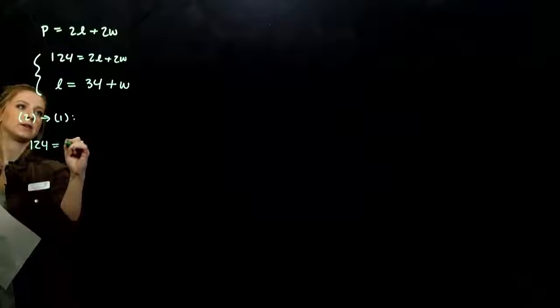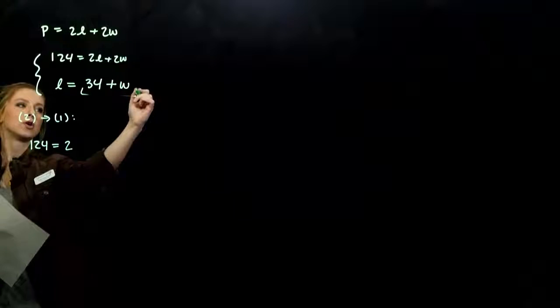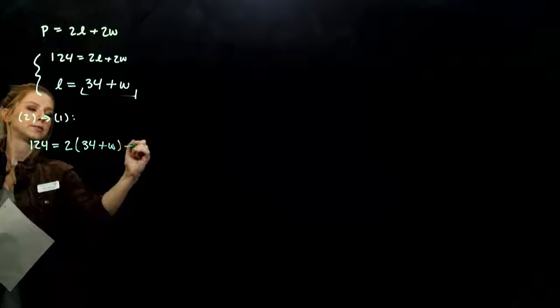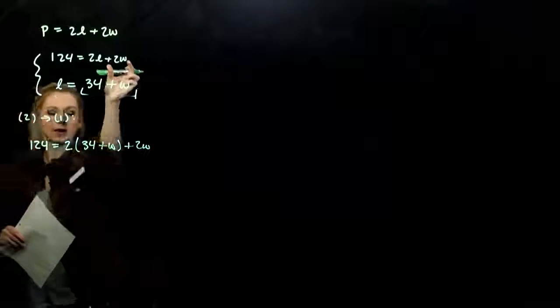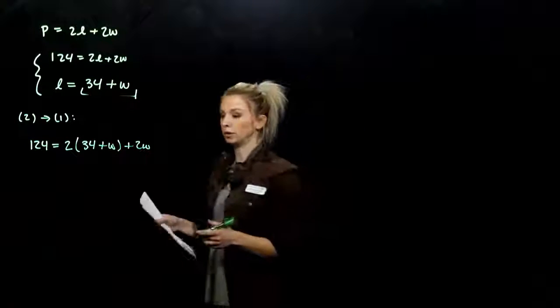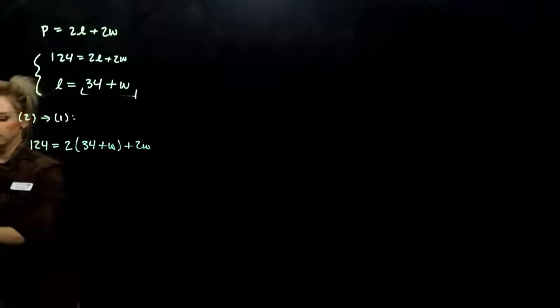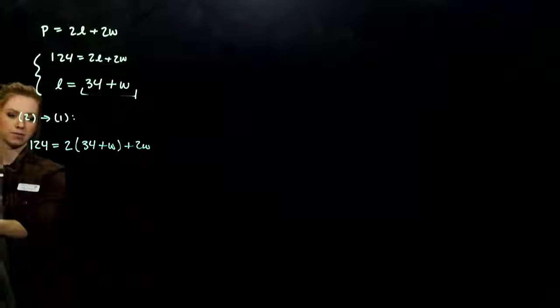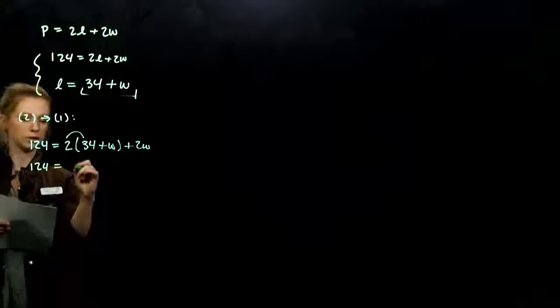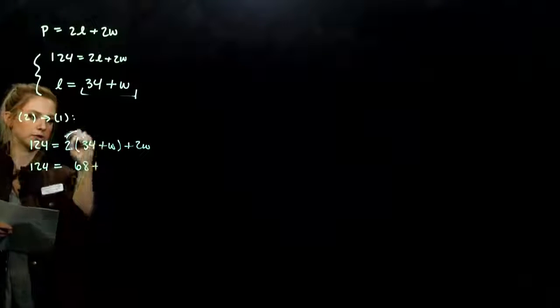So I'm looking at 124 is 2 times what I know L is equivalent to, 34 plus W. And don't forget the rest of the equation. So now everything is in terms of one variable, the width, which is good. So let's start solving. We want to get rid of the parentheses, so we have to distribute 2 into each of these terms.